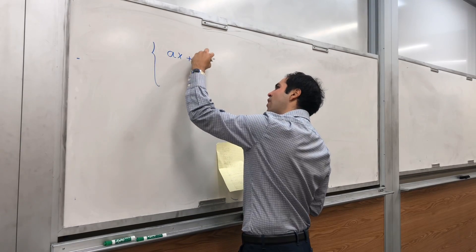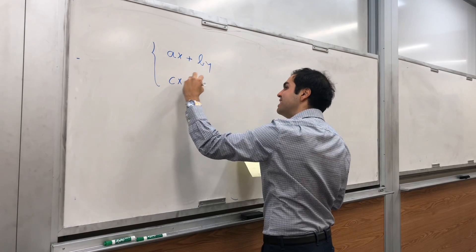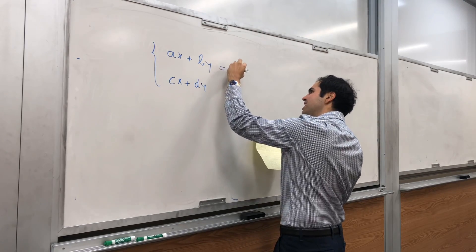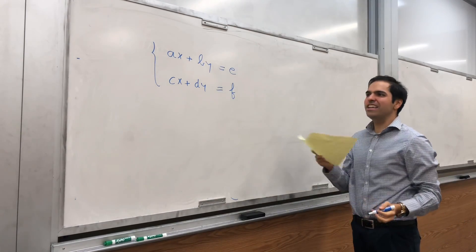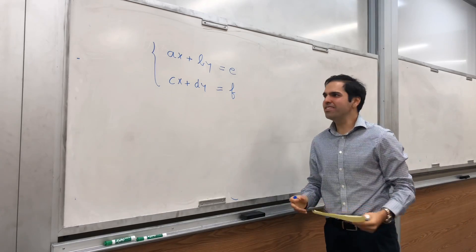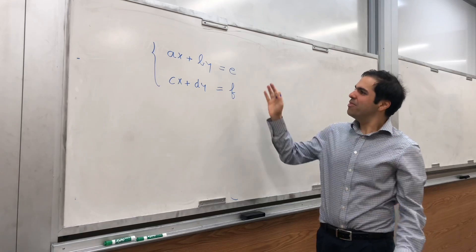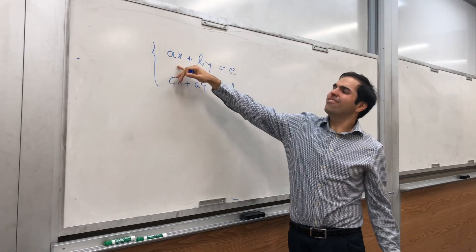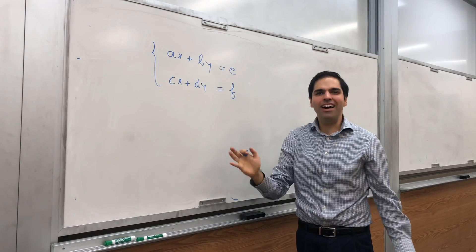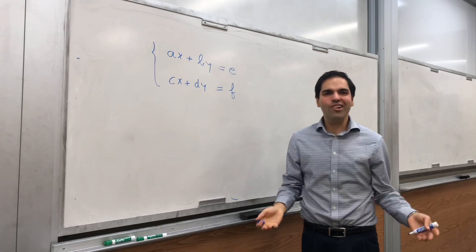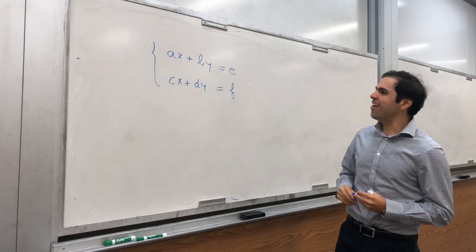AX plus BY equals E and CX plus DY equals F. I like to call it the ABBY system because when I wanted to publish this video, I wanted to put the title AX plus BY and my iPhone autocorrected it to ABBY. I was like, this is kind of cute. So let's just call it like that.